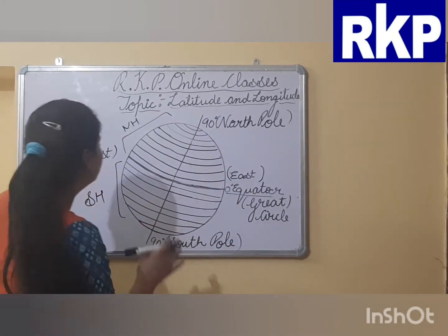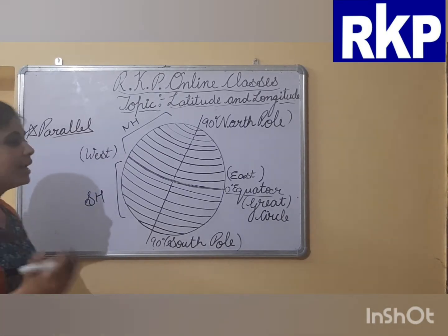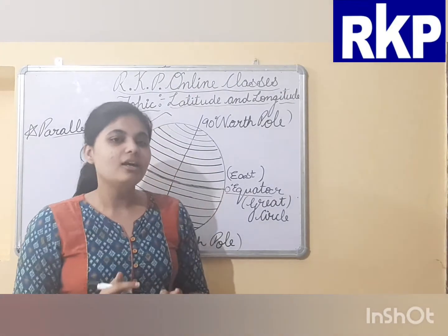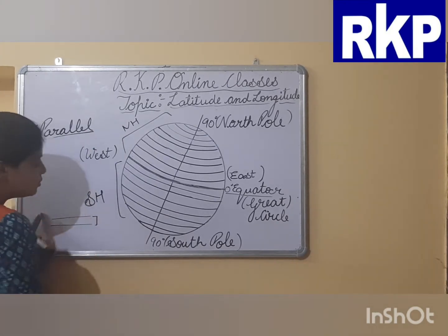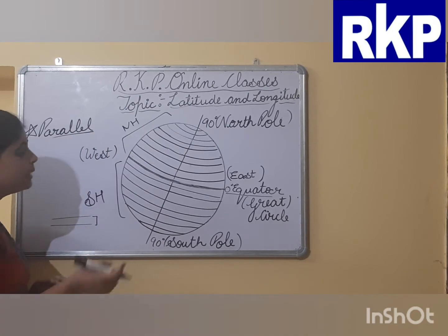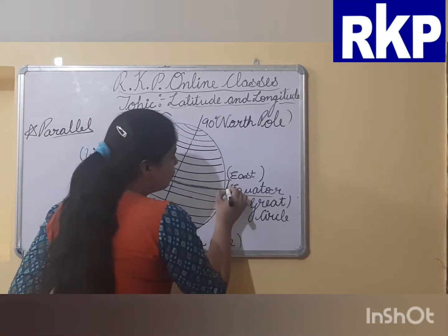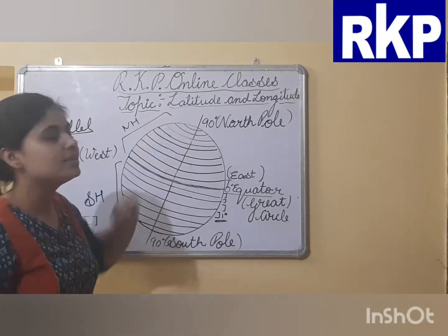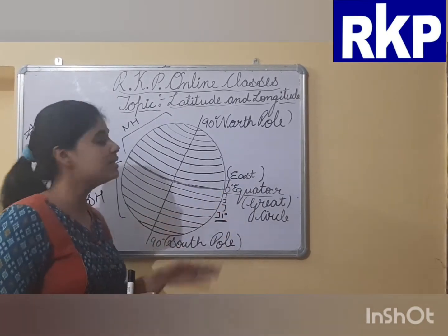One more important fact about latitude: they are also called parallel lines, or parallels. Why are latitude lines called parallels? Because all the latitude lines are parallel to each other. Parallels means two lines moving in the same direction where the distance between them is also the same. All latitude lines move in the same direction and the distance between each line is also one degree — that's why they are called parallels.